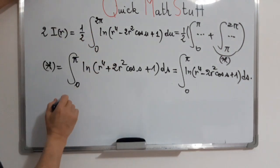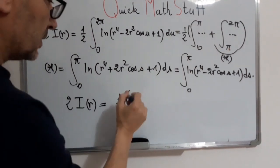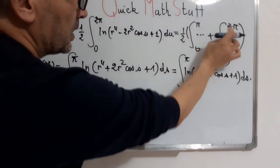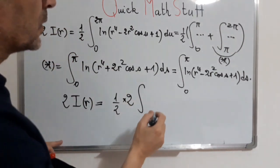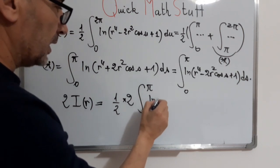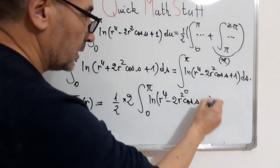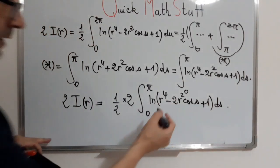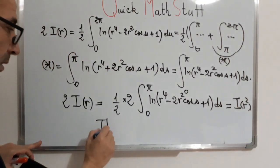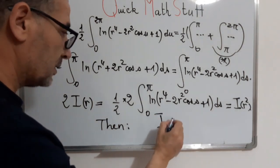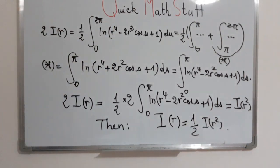So now we conclude the following: 2 I of r will equal 1 over 2, and the same terms are equal, so we can write that 2 times integral from 0 to π of ln of r to the fourth minus 2r squared cosine s plus 1 ds. And this is exactly I of r squared. Then we obtain that I of r equals 1 over 2 times I of r squared, as we want.